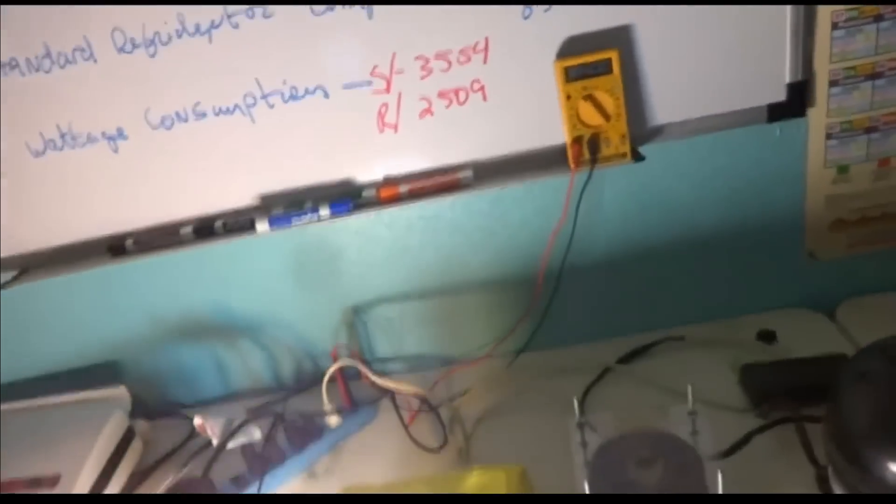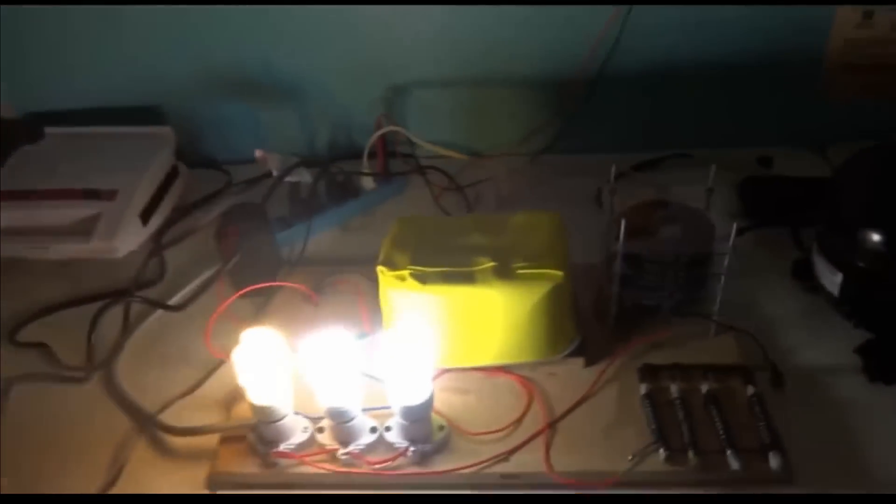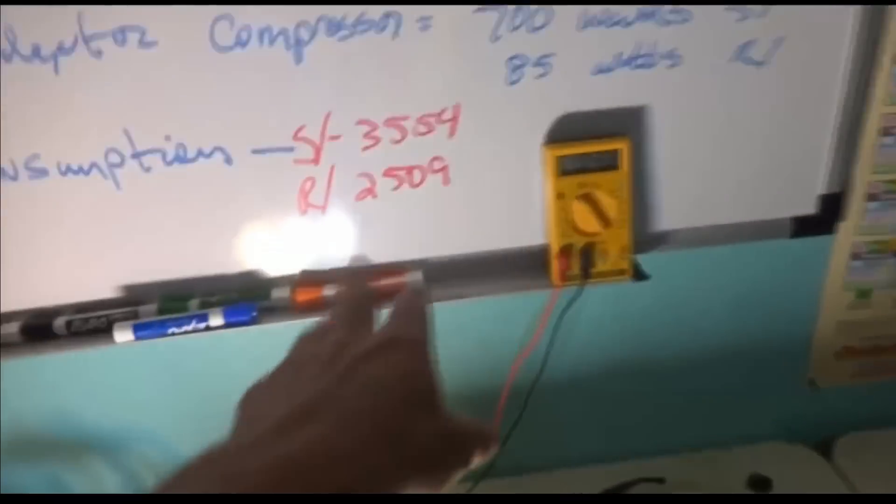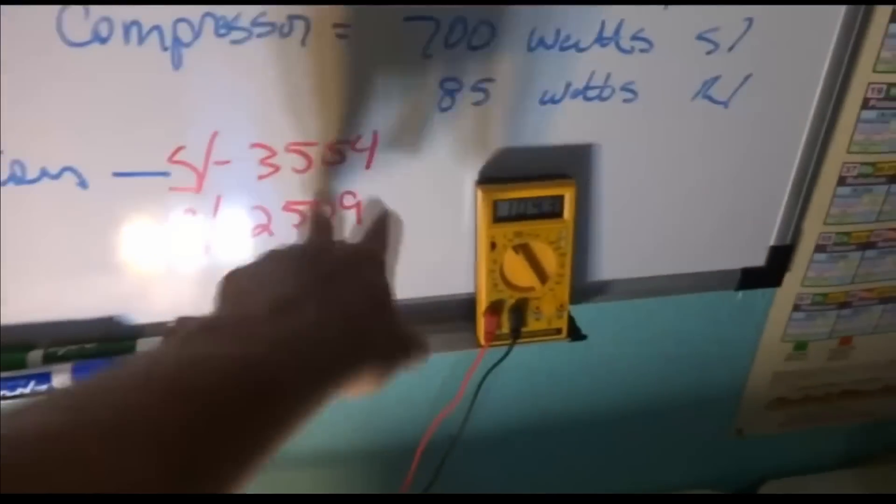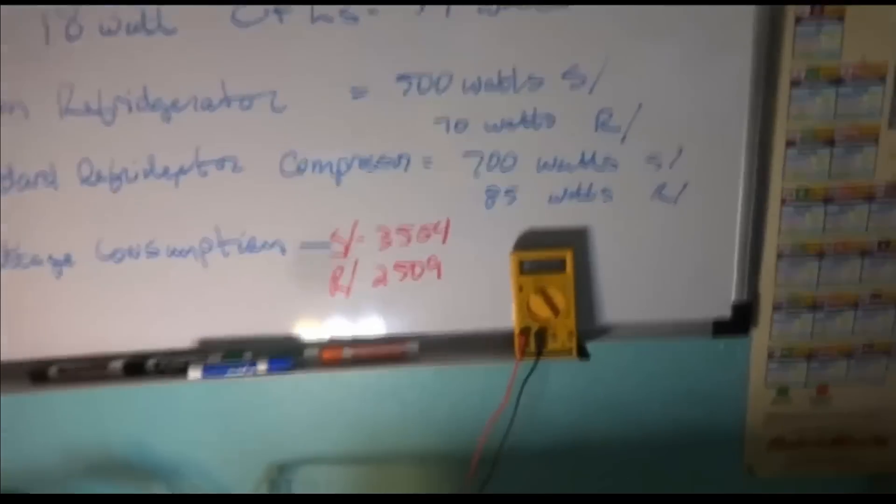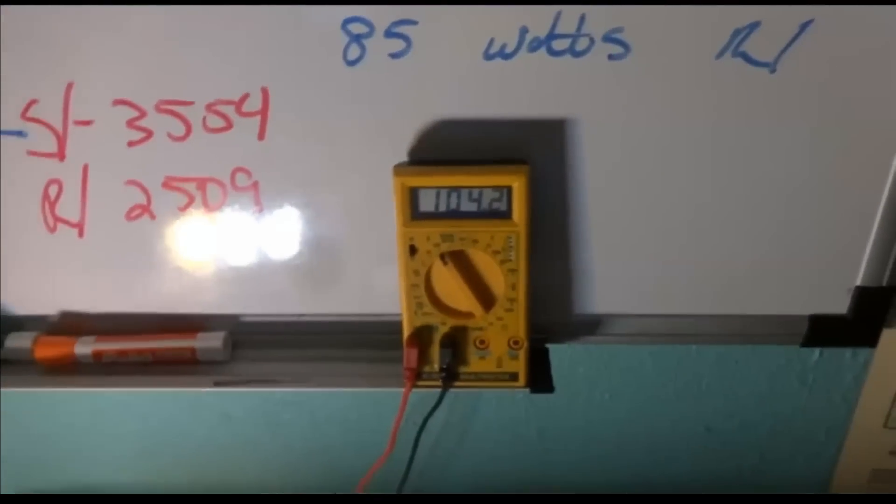Because I had something that needed to be secured down there moving around on me. That increased that up to 3584 on the start. On the run, we're running right now at 2509. We got 104.3 volts shooting out.